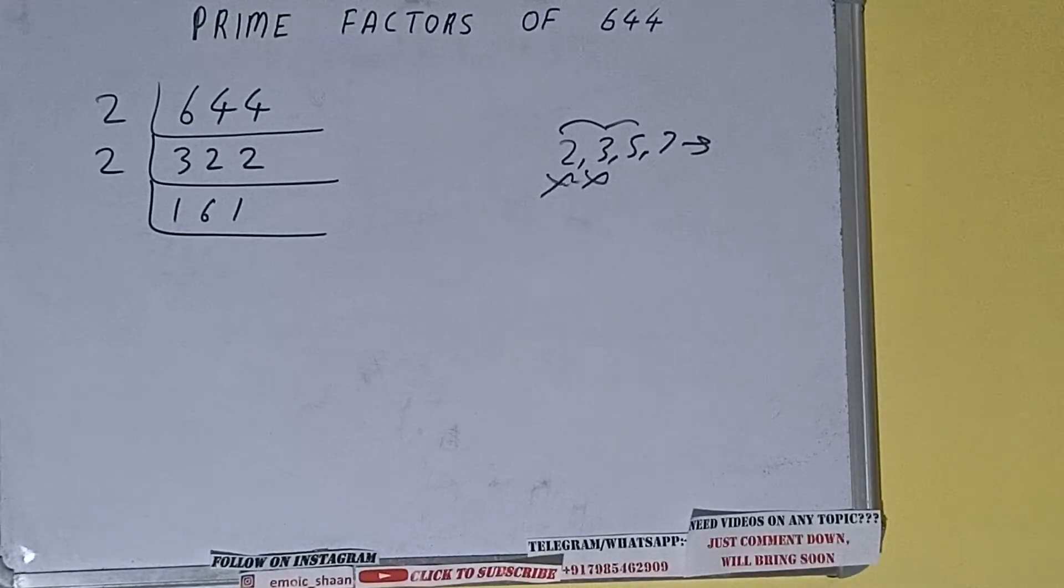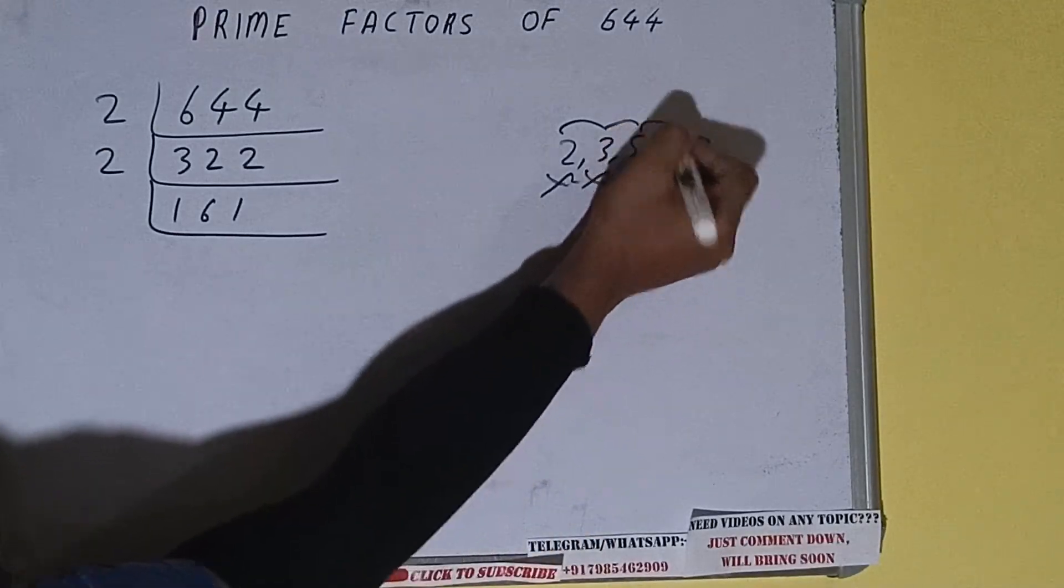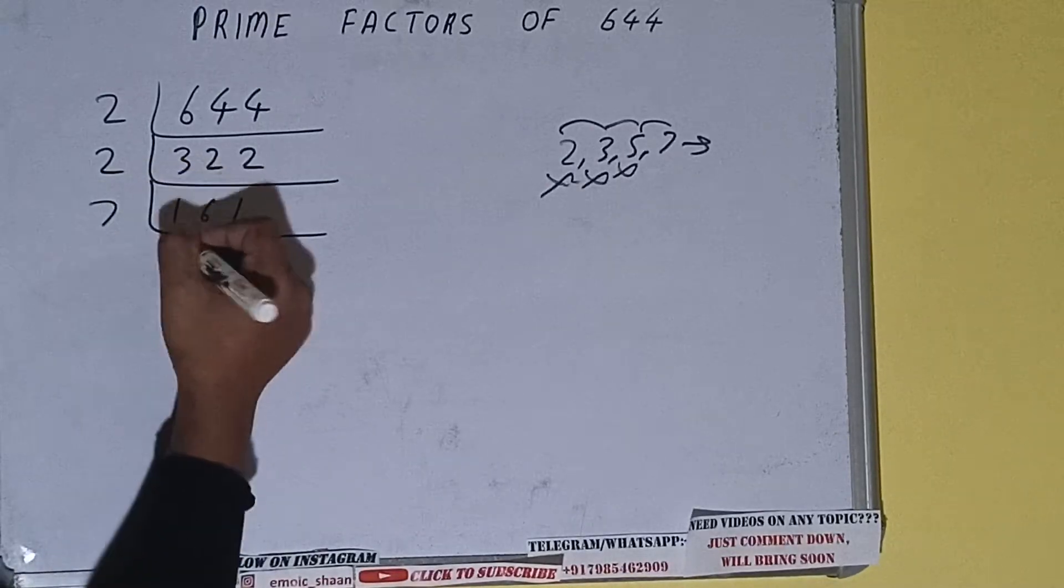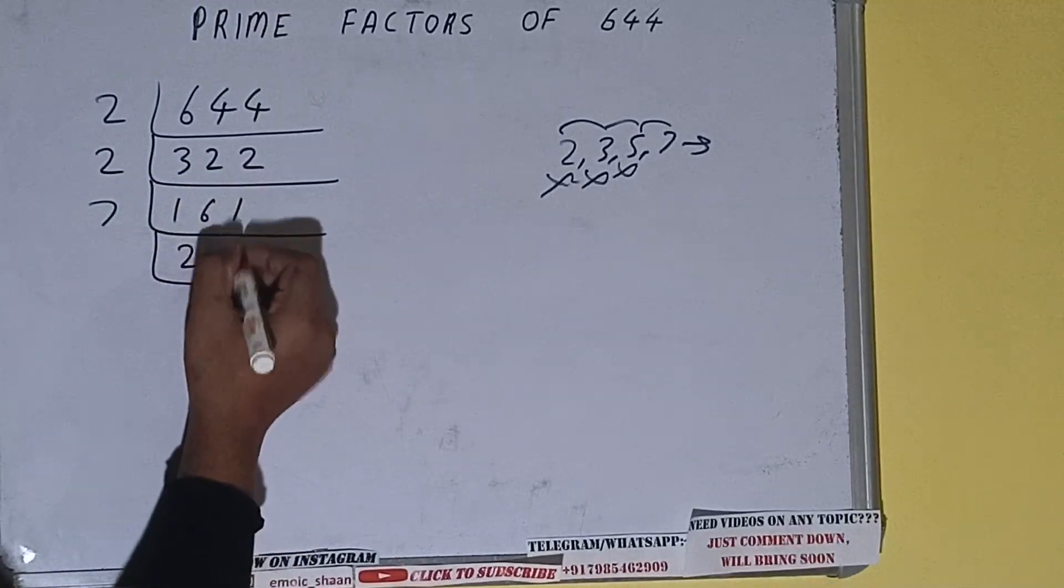Let's check with 7. 7×2 is 14, 7×3 is 21. It is divisible by 7, so divide it. 7×2 is 14, 7×3 is 21. We'll be having 23.